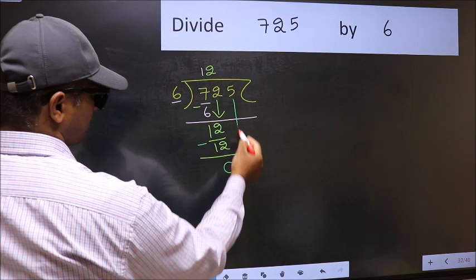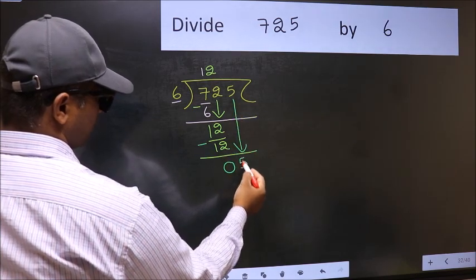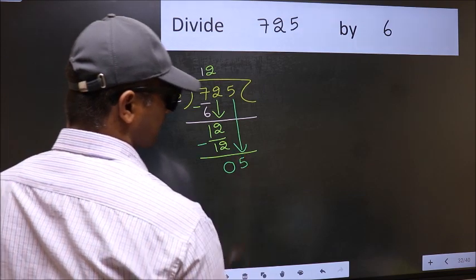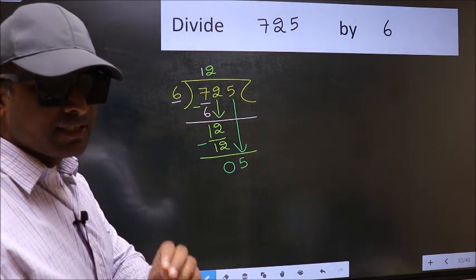After this, bring down the beside number. So 5 down. After this step, the mistake happens. And the mistake is this.